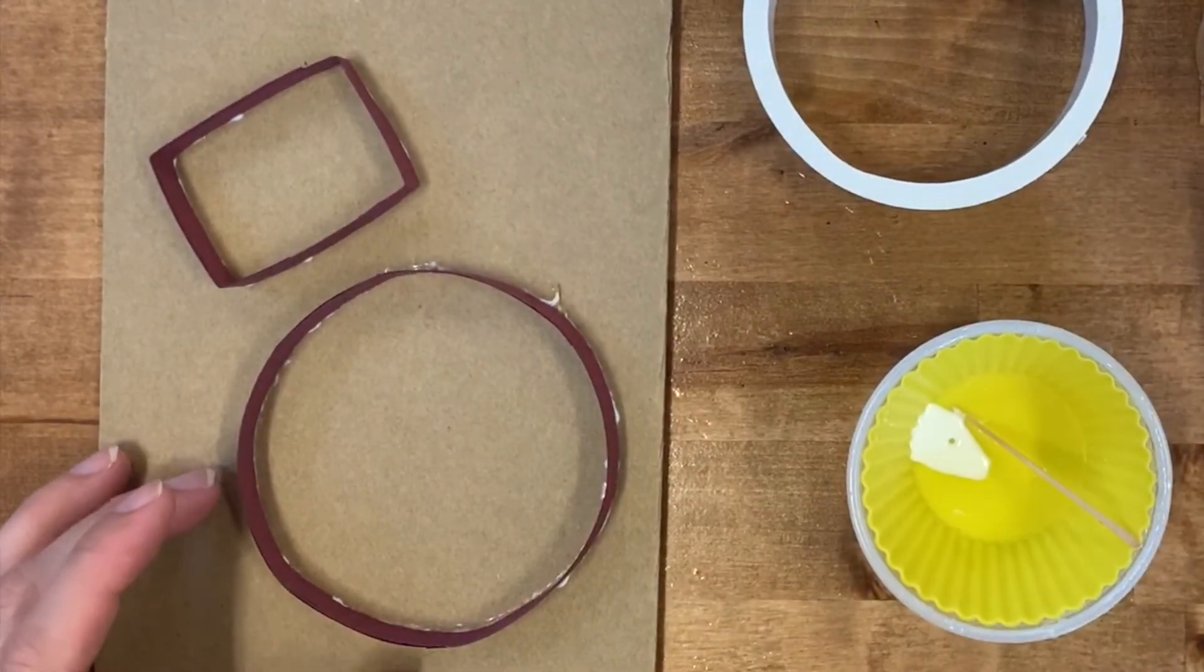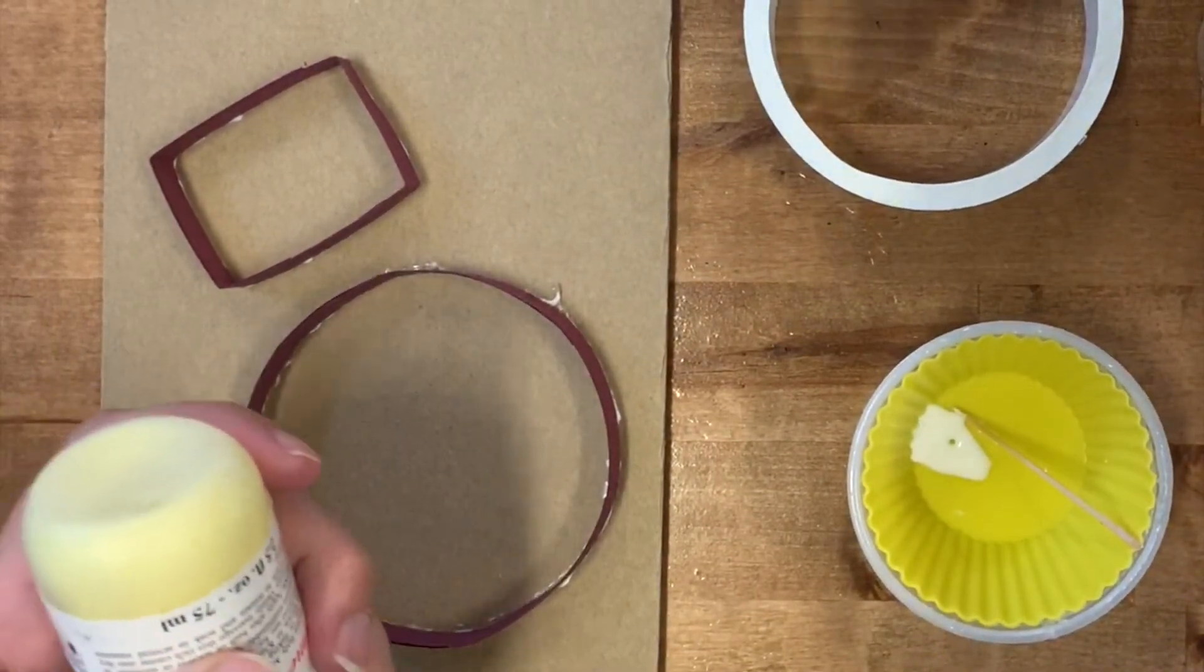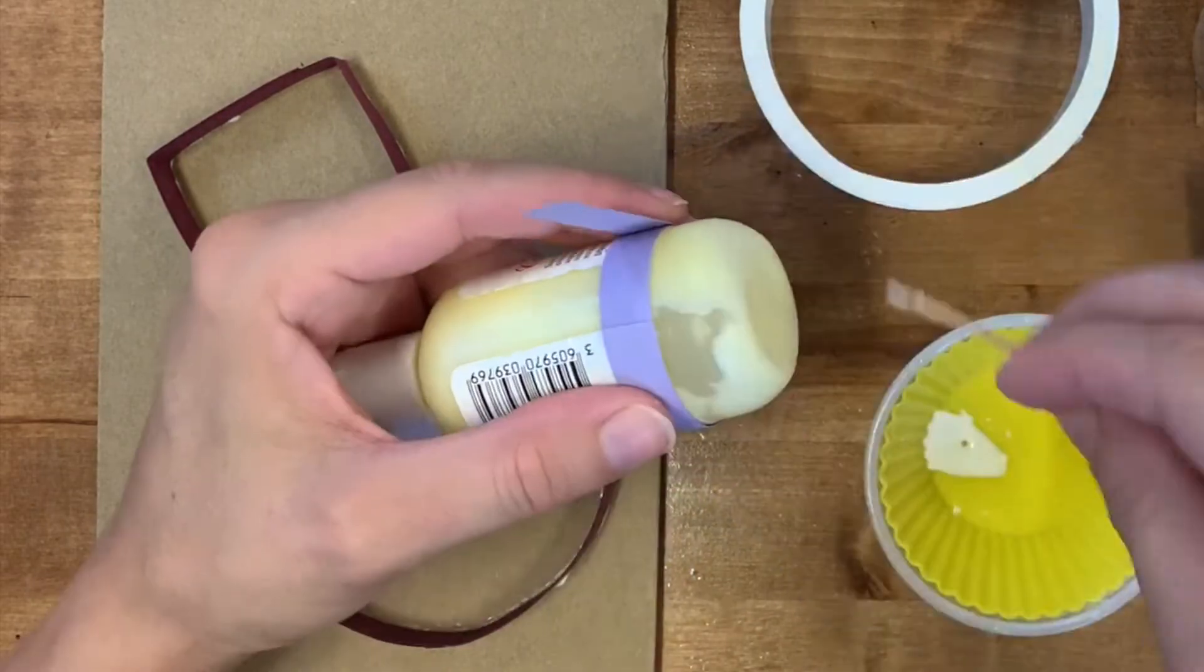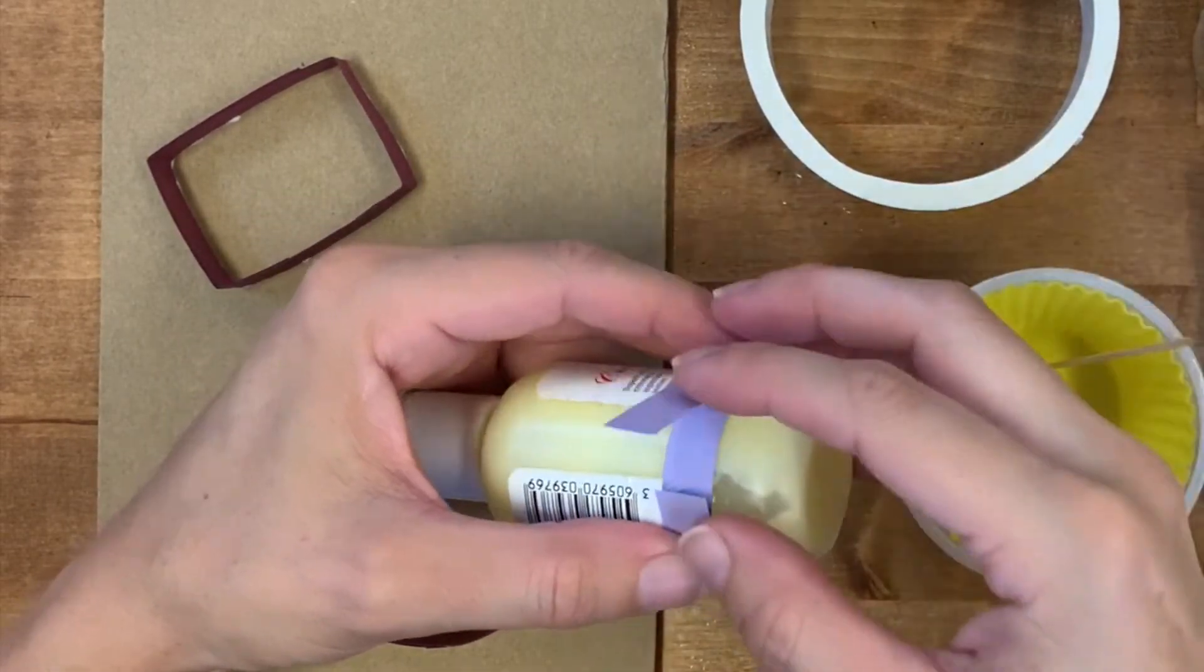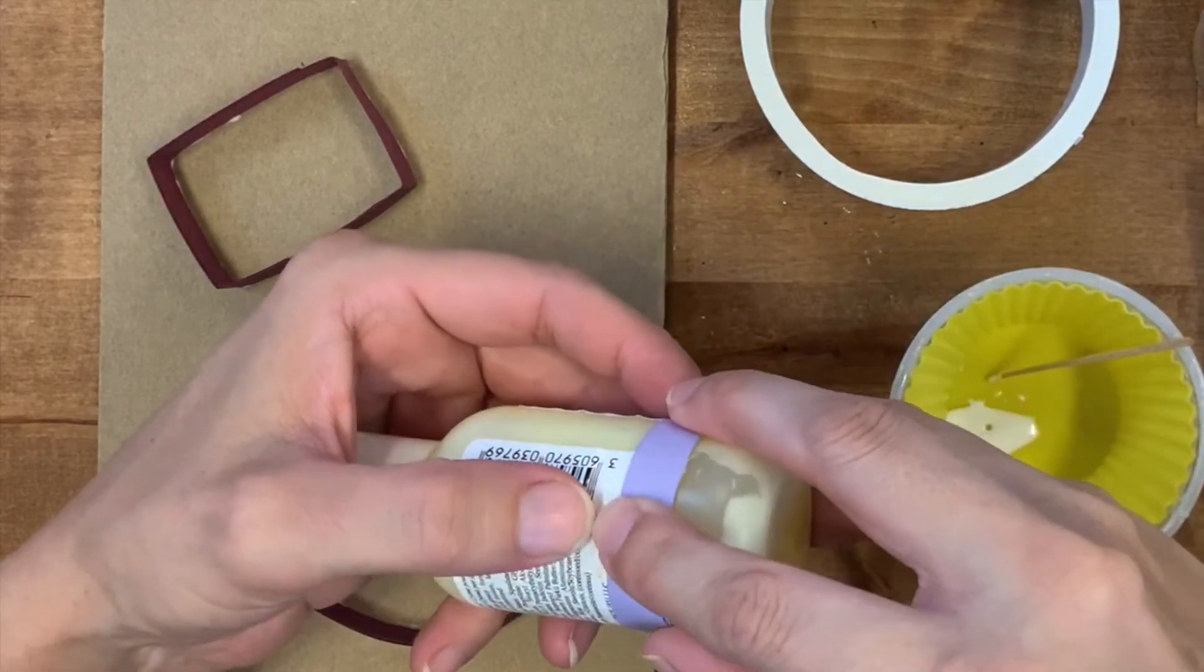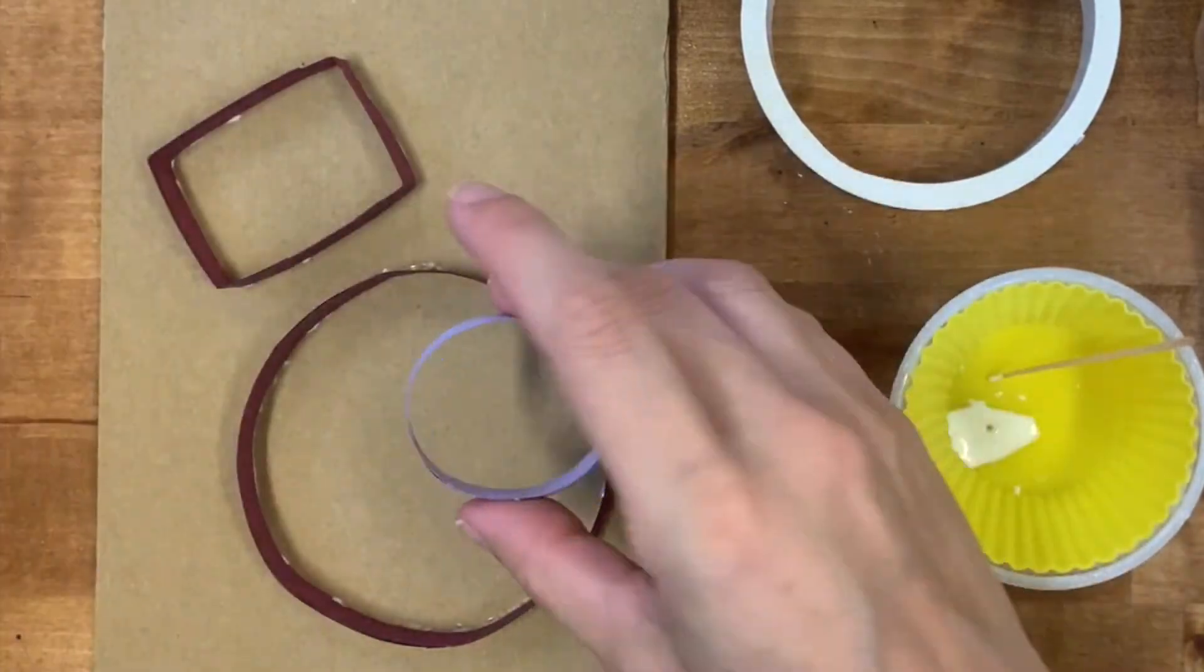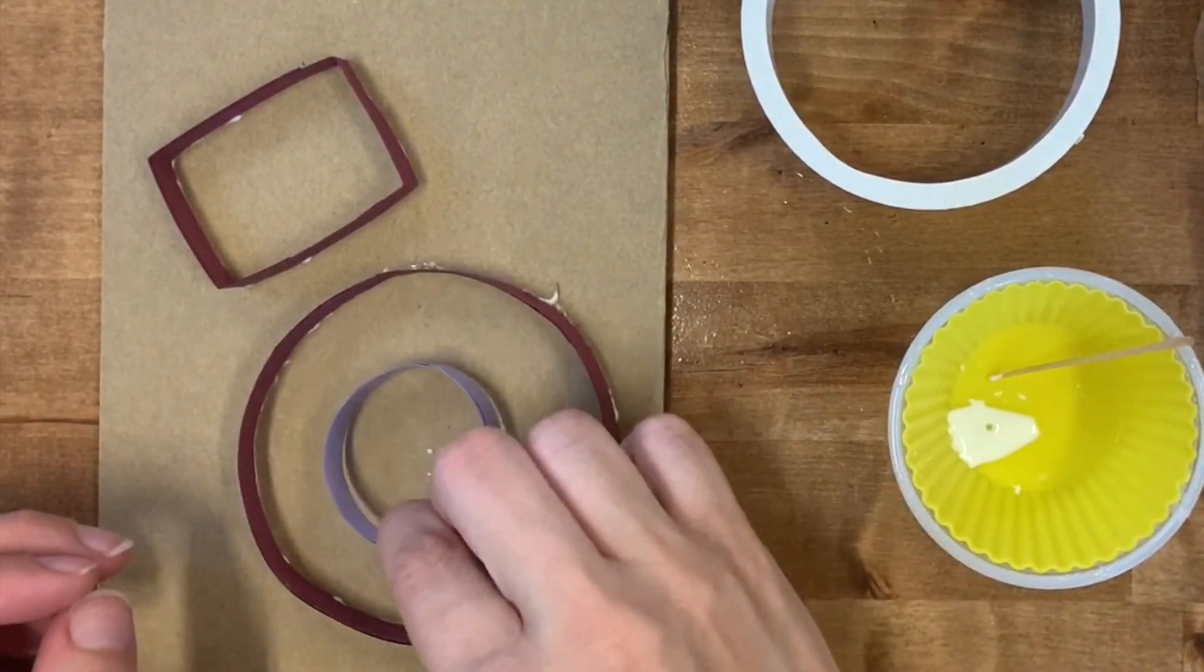So I'm going to use this lotion bottle. And remember, I want to use more than one layer to make it stronger. Once it's all the way glued, I can gently pull it off and decide where I want to put it.